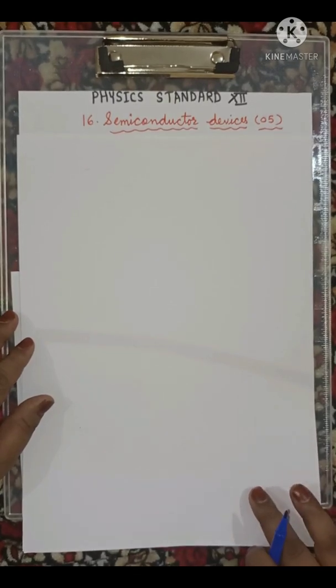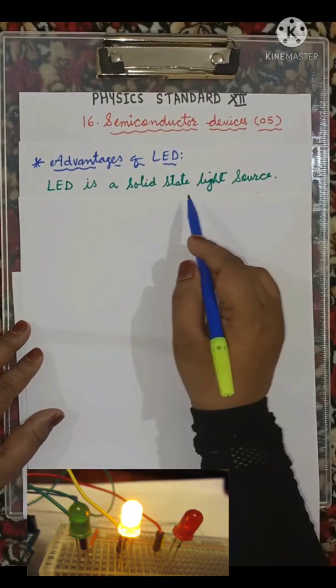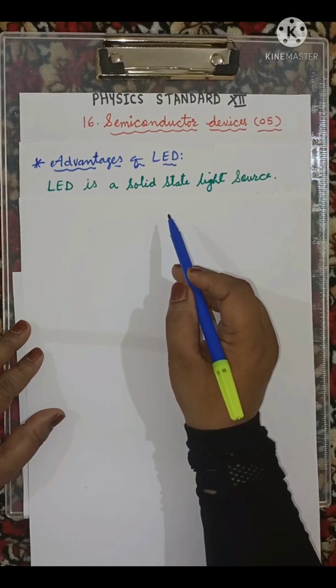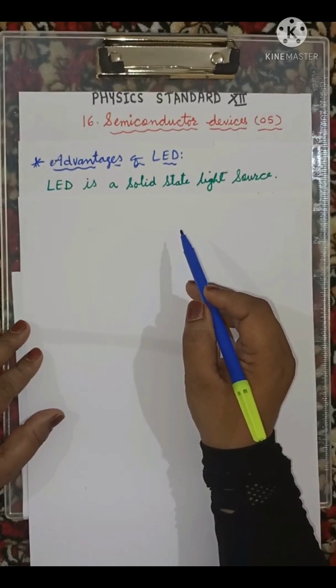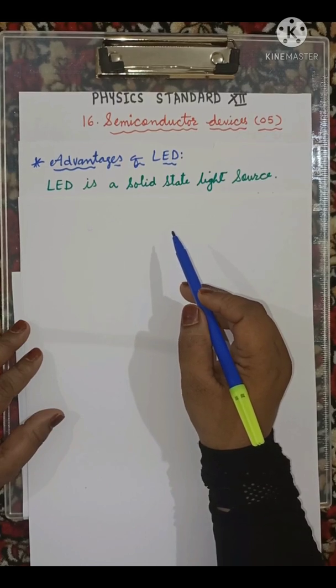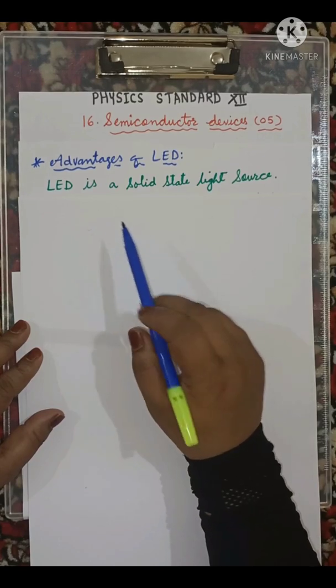Now come to today's point: advantages of LED. LED is a solid state light source, meaning it is made up of solid materials like organic or inorganic diodes with no filament, tube, or bulb to break.